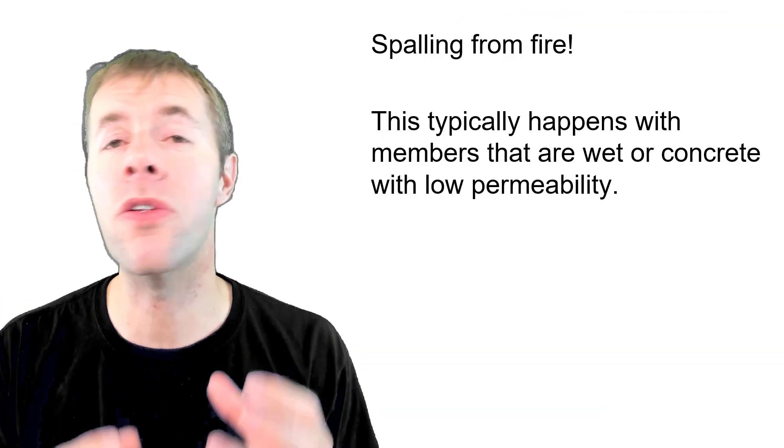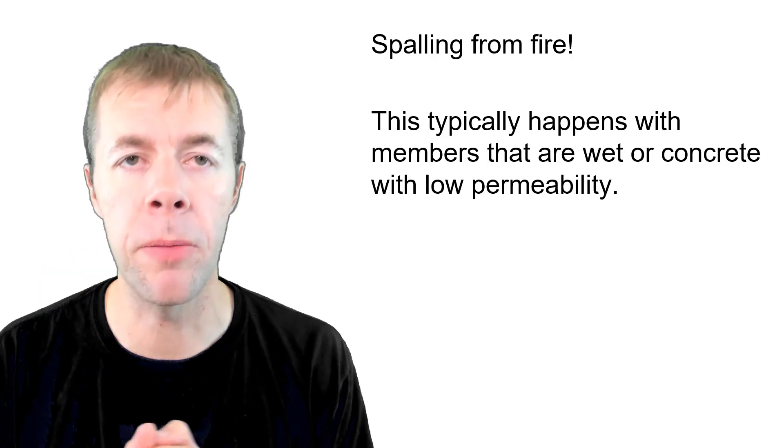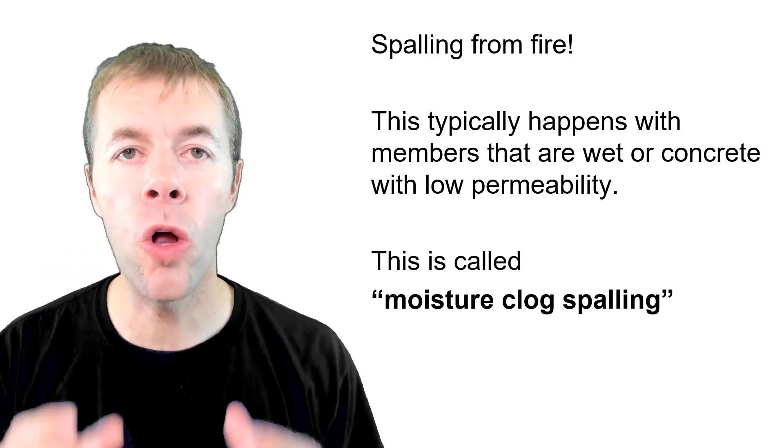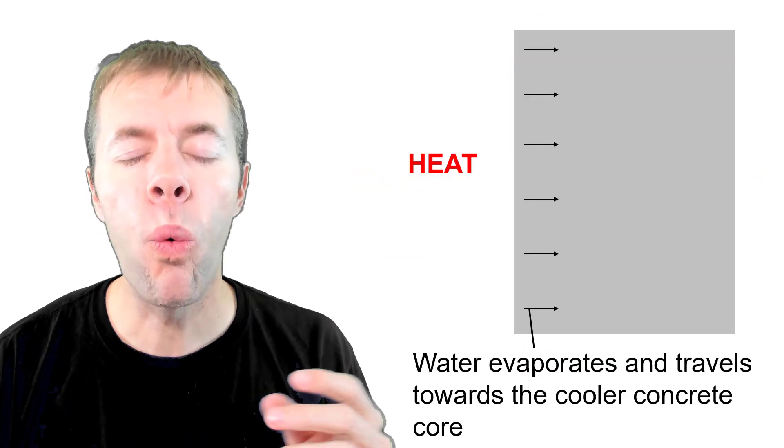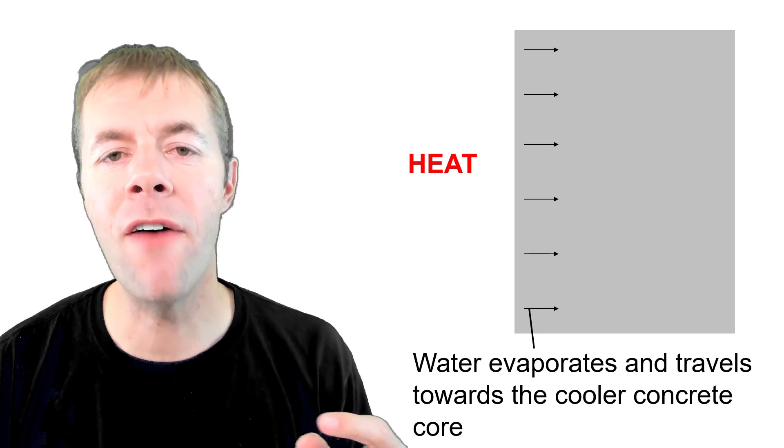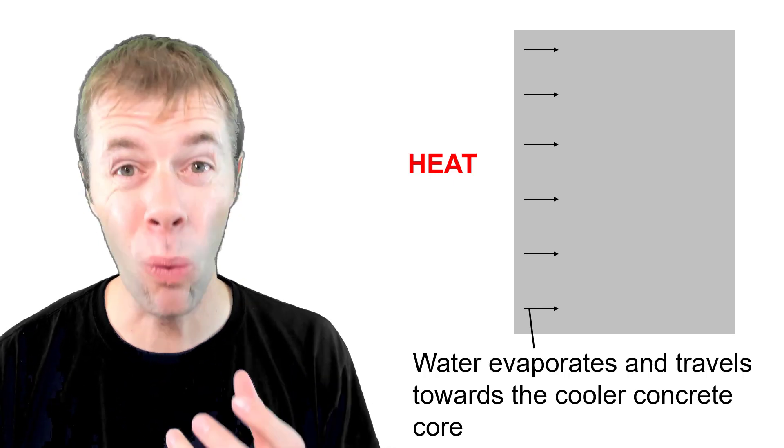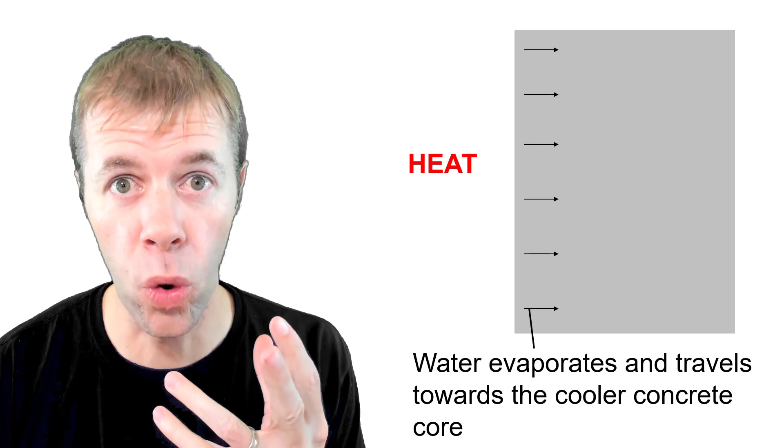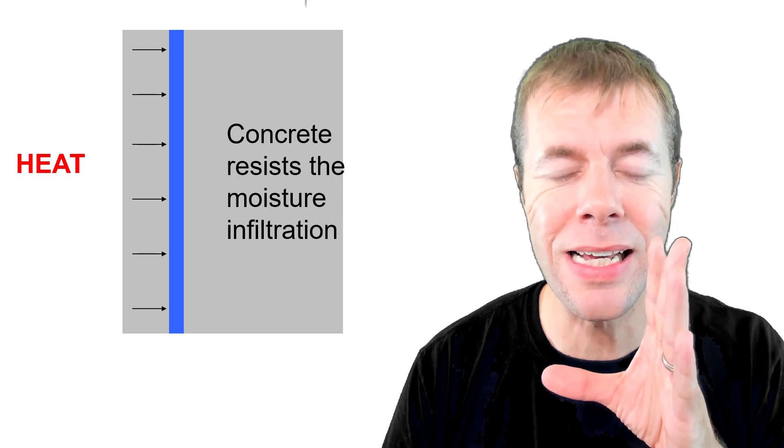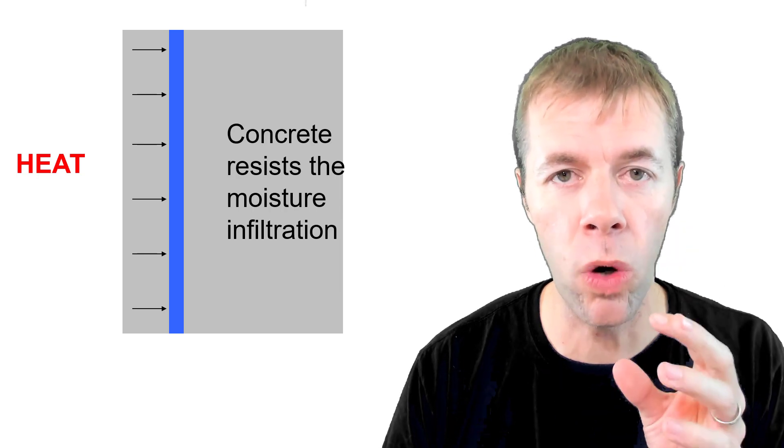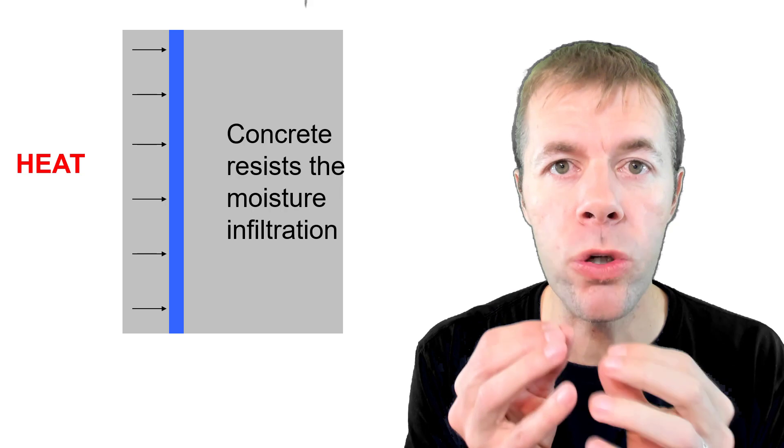This typically happens when either the concrete's wet or the concrete's made with really low permeability. This phenomenon is called moisture clog spalling. If you have a concrete member with fire around it or heat coming around, we're going to look at a cross-section or localized area. On that surface as it's heated up, the water is going to evaporate and travel towards the center of the concrete because it's cooler there in the core. The water is going to start to condense and start to build. Then this concrete is going to resist the infiltration of this water because that's what the concrete does. It's a very tight pore structure.